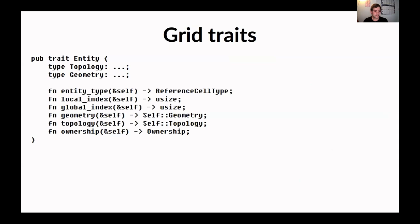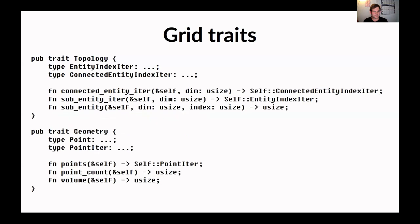This is the trait for an entity — some entity in the mesh, whether a triangle, an edge between two triangles, or a point. It has sensible things: an entity type telling you whether it's a triangle, quadrilateral, interval, or point; a local index and a global index. The global index relates to MPI parallelization — it can have a local index on the current process and a global index in the entire mesh. It also stores geometry, topology, and ownership information for MPI. I'll say more about geometry and topology on the next slides.